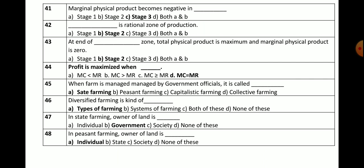Question number 47: In a state farming system, who is the owner of land? Options: individual, government, society, or none of these. This question is actually about peasant farming — the correct answer is individual. In peasant farming, the farmers themselves are the owners of the land.